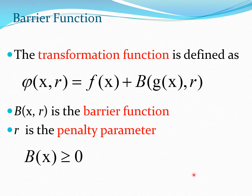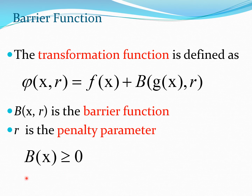If you have a barrier function, you can express the transformation function as a sum of two parts: the objective function f(x) and the barrier function. The barrier function contains g(x) and the penalty parameter r. Just like the penalty function, the barrier function must be greater than 0, acting as a penalty or barrier on f(x). Typically, φ(x, r) will have a greater value than f(x) if there is a constraint violation.